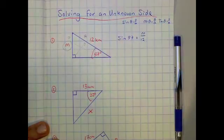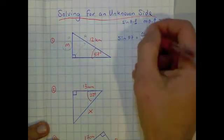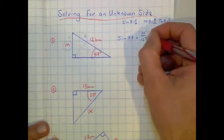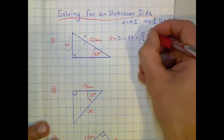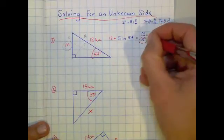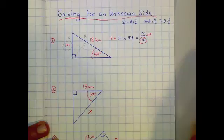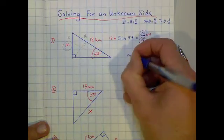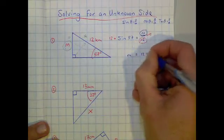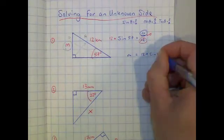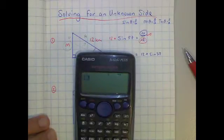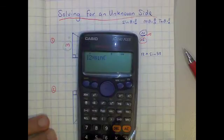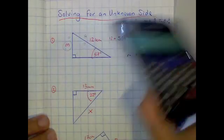Now we solve — we've done plenty of these in class. We get rid of the divide by 12 by multiplying both sides by 12, which removes the 12 and leaves M by itself. So M equals 12 times sin(57). I grab my Casio calculator, go 12 times, press the sine button, then 57 — that gives us 10.06.